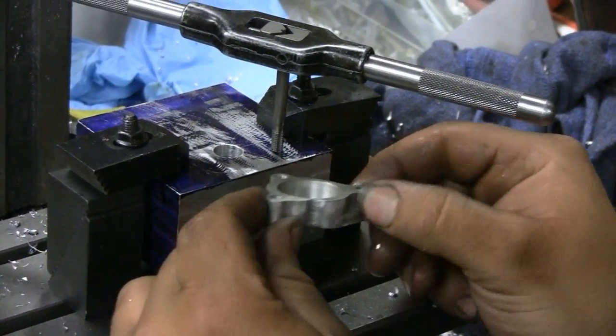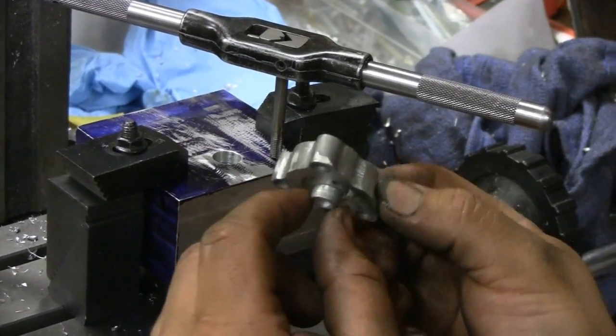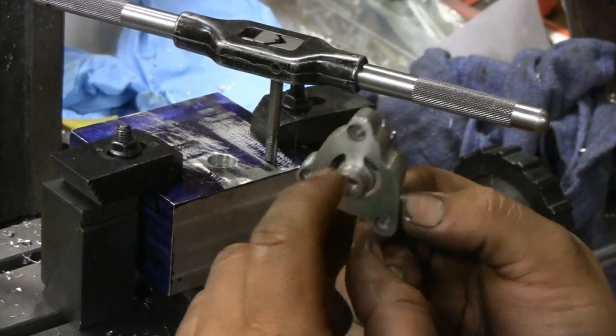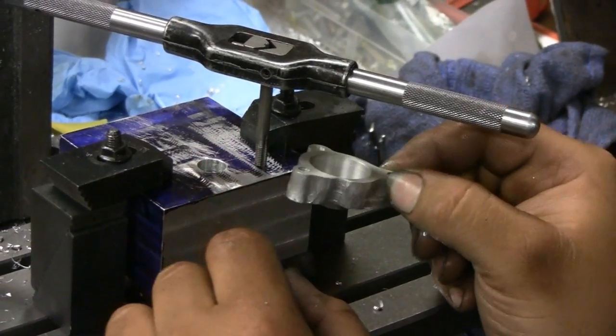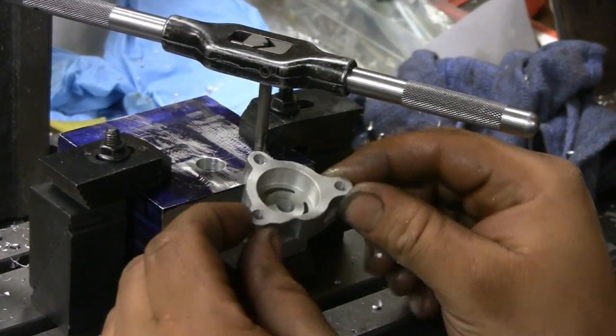There's going to be one, two, three mounts for it and this little, I actually call it almost a bearing. It rides inside that locator hole there, holds it stationary.